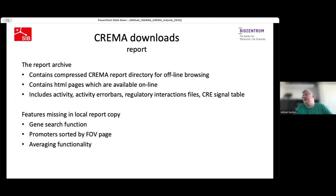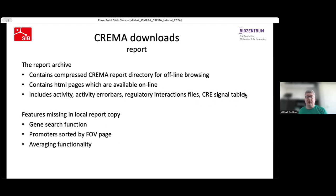Like for ISMAR, the CREMA report download contains all information available online — HTML pages, pictures, CRE information in GFF format, and binding site predictions. The features missing in the local copy are: the gene search function, the page with fraction of explained variance per promoter, and the averaging functionality. Like ISMAR, data is kept on the server for a minimum of six months, and currently the user input data is also retained on the server after analysis finishes.